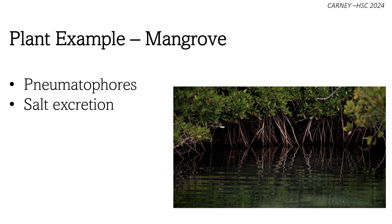Mangroves are a group of trees and shrubs that grow in coastal saline or brackish water. They have pneumatophores — specialised roots that act like snorkels when partially flooded — and have pores called lenticels that cover their surface area where oxygen exchange occurs. The lenticels contain hydrophobic substances, meaning they repel water, so when submerged, water cannot flood into the roots.